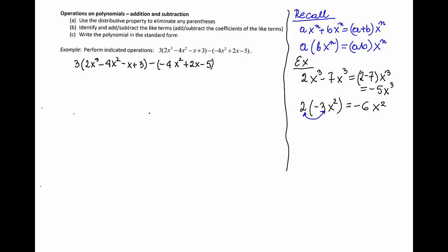With that in mind, we can go to our example and subtract the polynomials. Again, the first step is to remove the parentheses. We remove the parentheses by using distributive property. The 3 will have to be multiplied by any of the monomials inside the parentheses, and therefore we'll have 3 times 2x cube is 6x cube, then 3 times negative 4x squared will be negative 12x squared, then 3 times negative 3x is negative 9x, and 3 times positive 3 is 9.